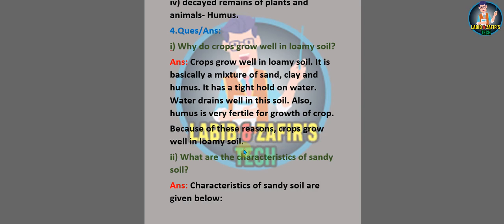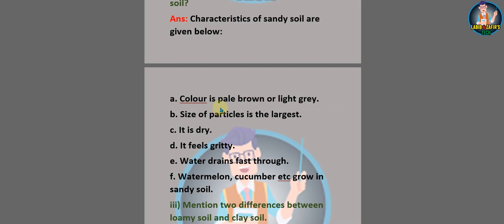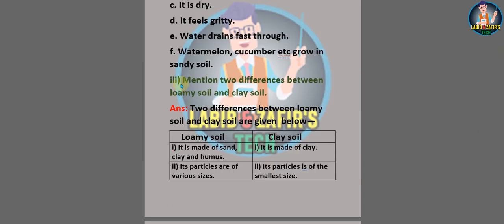Because of these reasons, crops grow well in loamy soil. Number two: what are the characteristics of sandy soil? Answer — characteristics of sandy soil are: A) color is pale brown or light gray, B) size of particles is the largest, C) it is dry, D) it feels gritty, E) water drains fast, F) watermelon, cucumber, etc. grow in sandy soil.